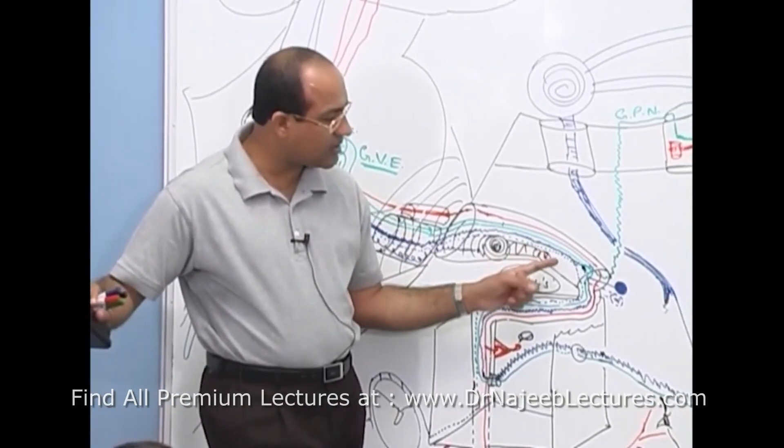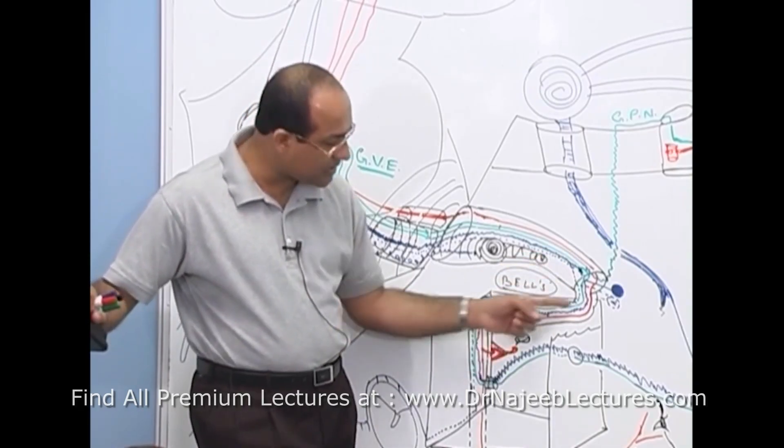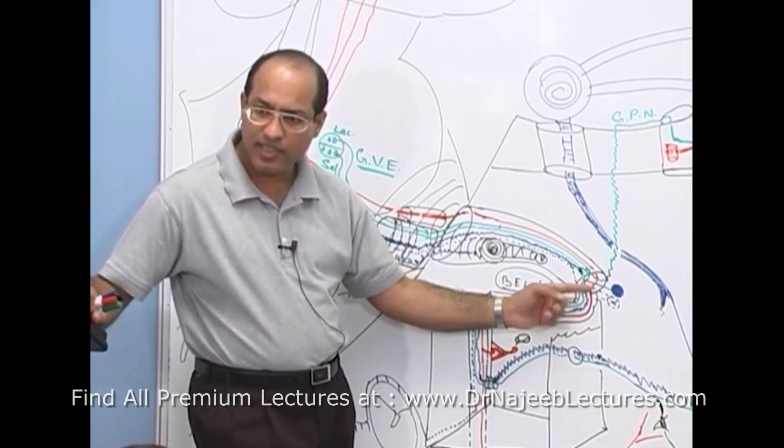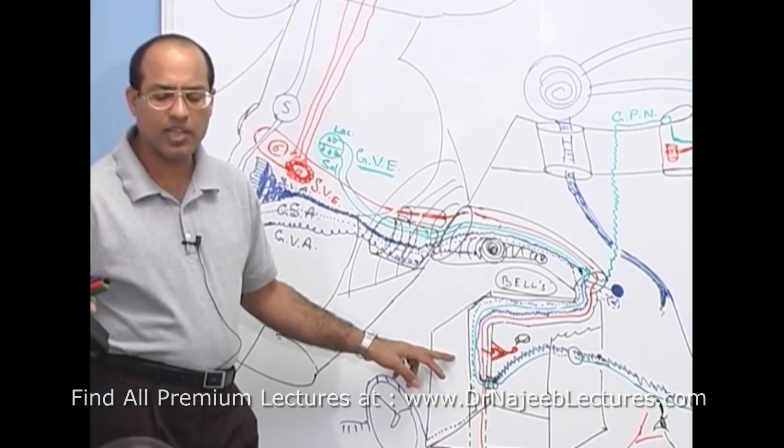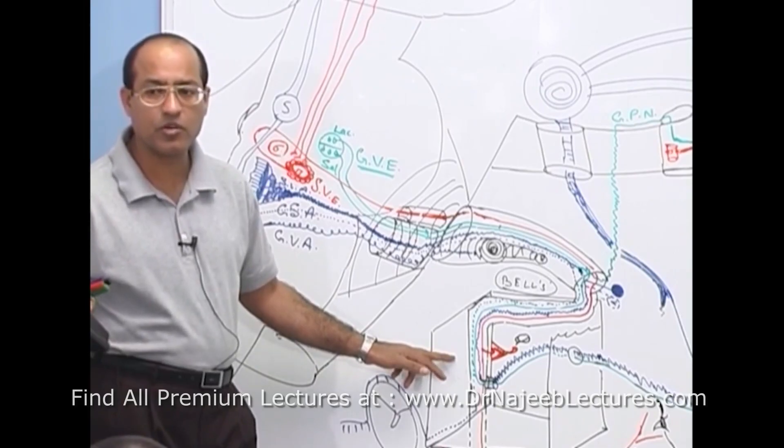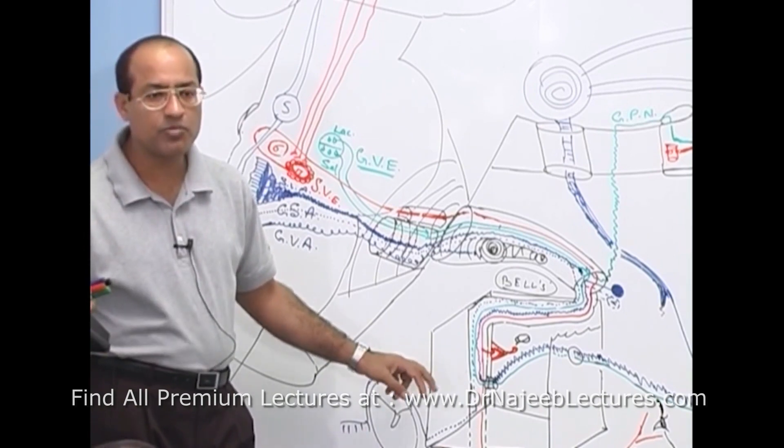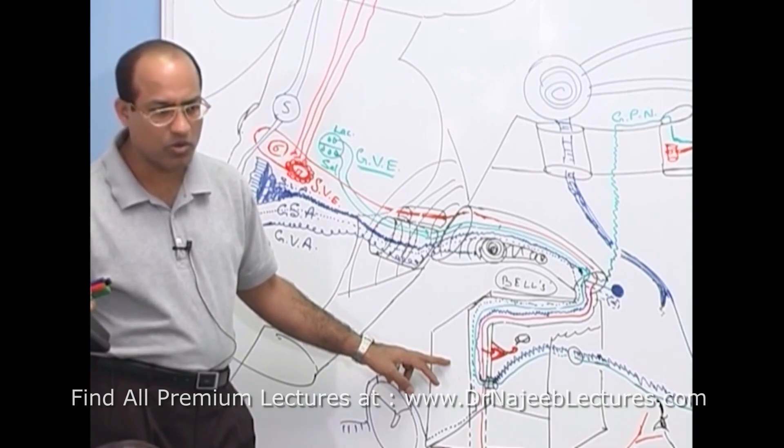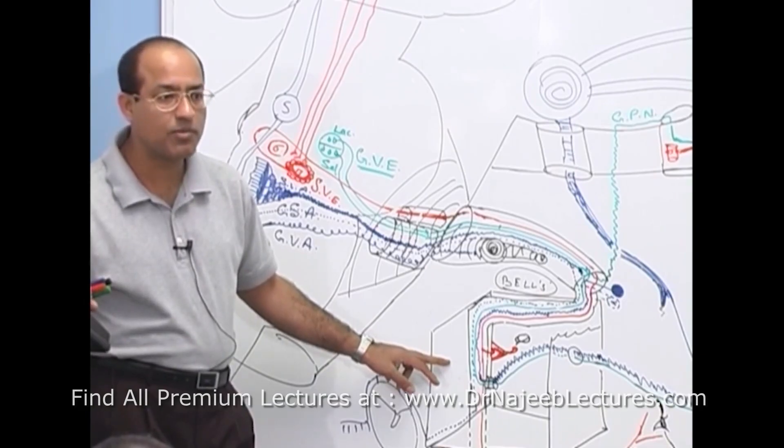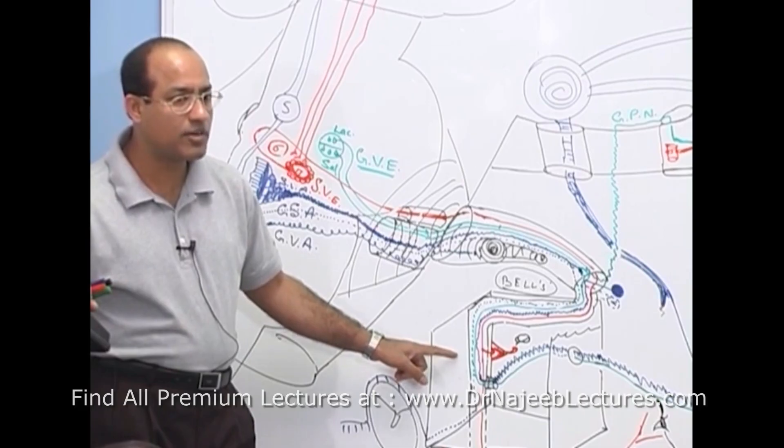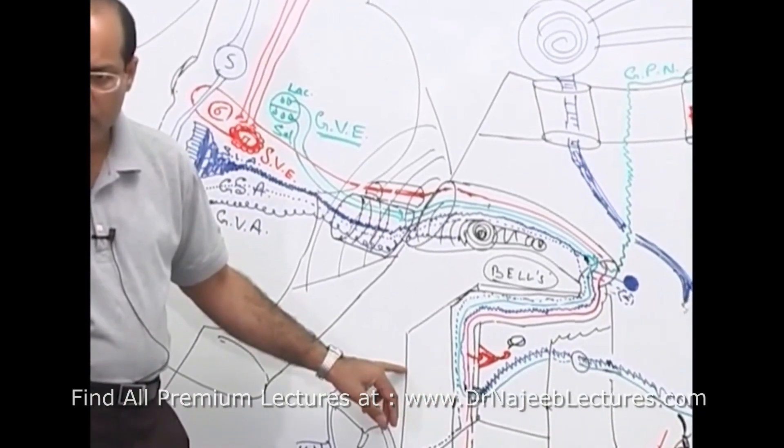Then, again if lesion is damaging the facial nerve in this particular area, lacrimation is lost along with other functions. But if lesion is distal to this area, then lacrimation is spared and other functions of facial nerve are lost. So, we were talking about patient with Bell's palsy and its management. What I was talking about most of the patient recover on their own. But still, if patient present within few days, about four to five days of the onset of the symptom, we must try steroids. Prednisolone. We give it about for 10 days and gradually taper it off. Because we are trying to reduce the inflammation of the nerve so that nerve does not swell so much in the canal that it damages itself more.